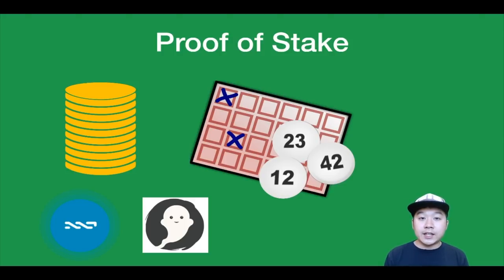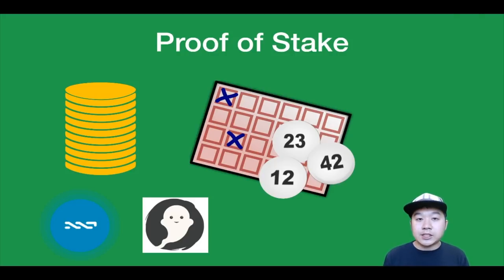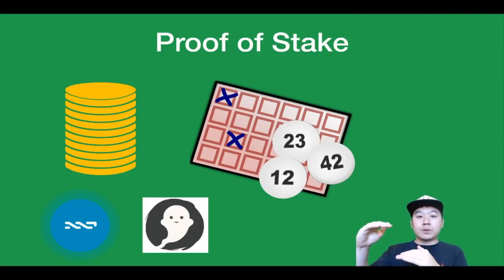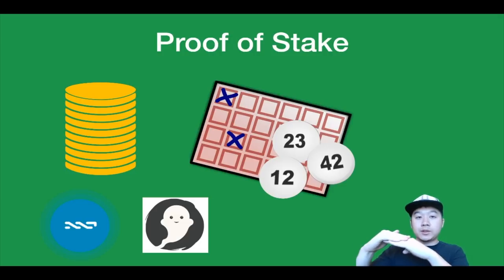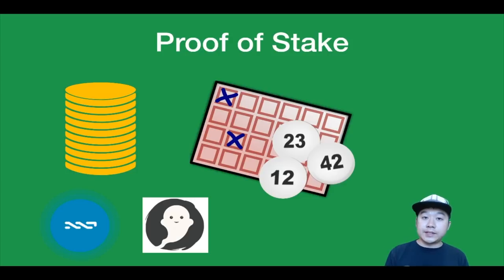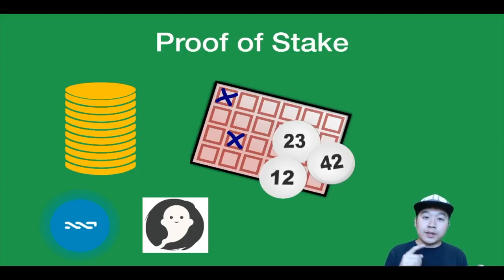Similarly to proof of work, you need a majority of the entire coin supply in order to attack the network. A big problem with proof of stake is the nothing-at-stake problem — because there's nothing tangible like electricity being used, only coins you're locking up, you can potentially vote for multiple different forks floating around the network, so consensus may never be reached. There are some solutions to this problem, though they're complicated. Some big-name projects that utilize proof of stake include NextCoin, Ethereum, Casper, PureCoin, and Cardano.